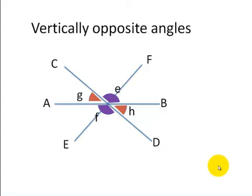Looking at this picture, you can see that angle E is equal to angle F because they are vertically opposite angles, and angle G is equal to angle H because those two are also vertically opposite angles.